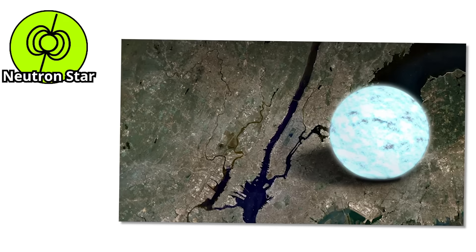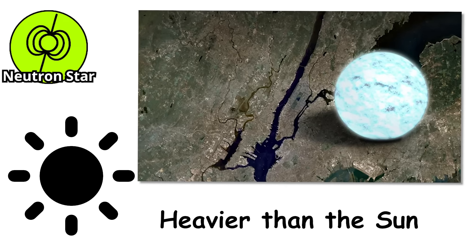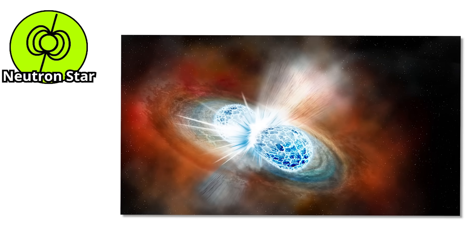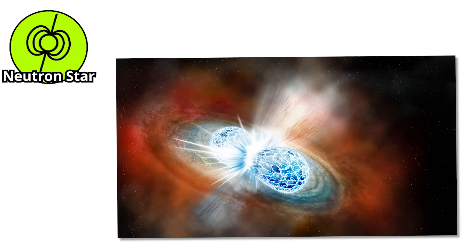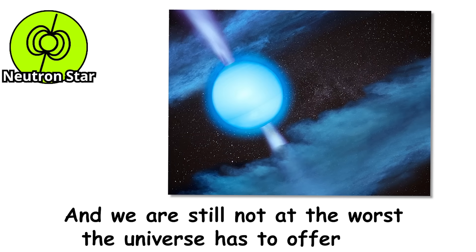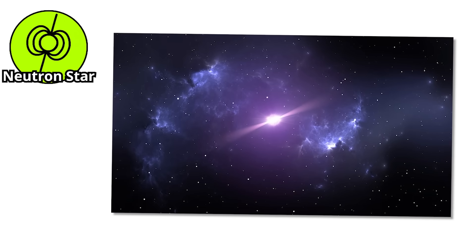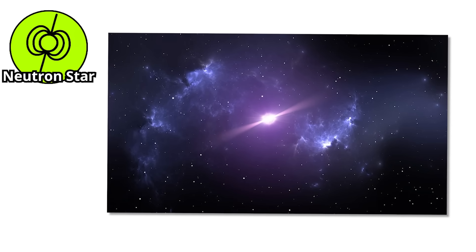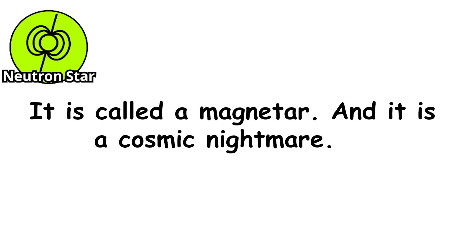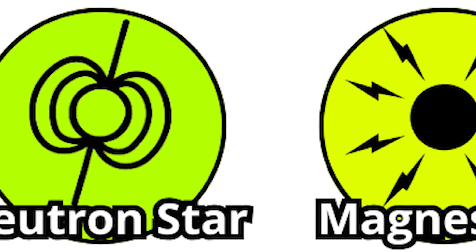So just to recap, you have an object the size of a city, heavier than the sun, with crushing gravity, insane magnetism, and blinding radiation. And we are still not at the worst the universe has to offer. Because there is one kind of neutron star that makes all the others look tame. It is called a magnetar, and it is a cosmic nightmare.